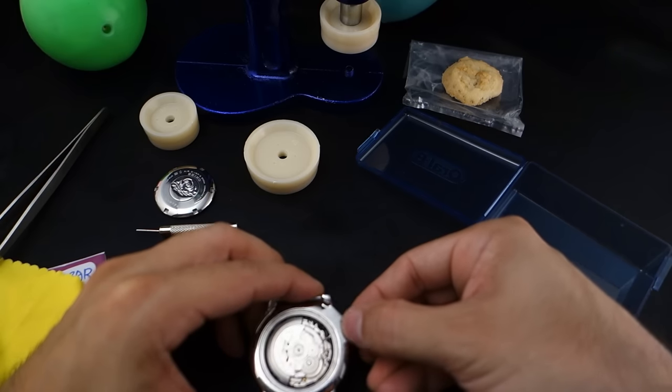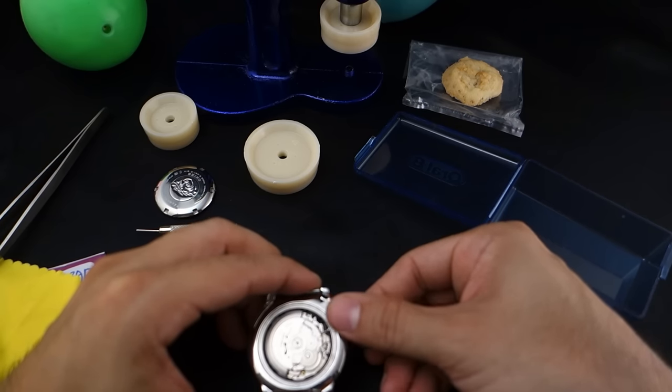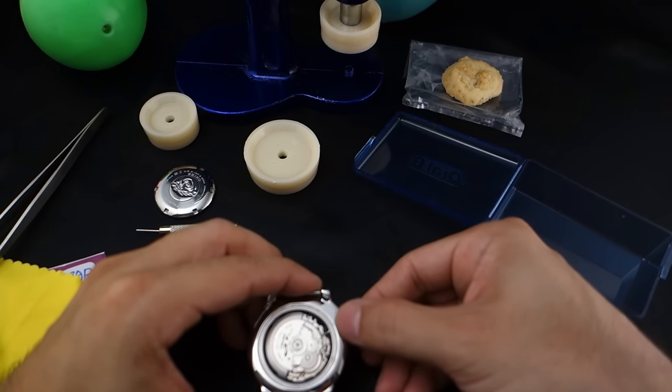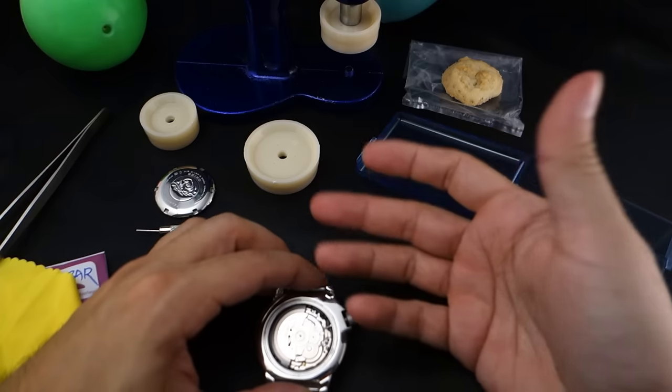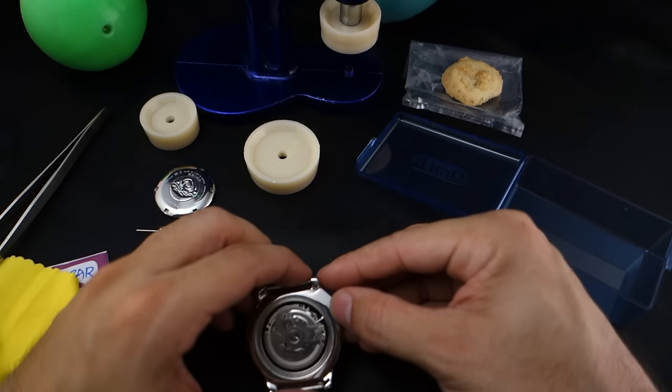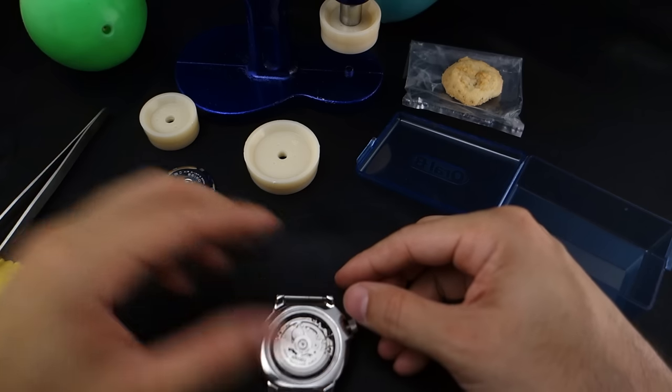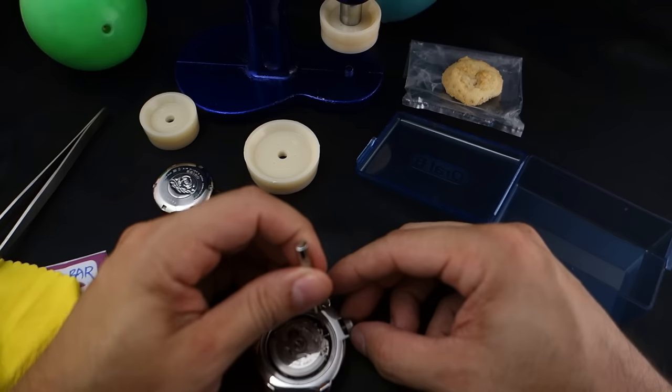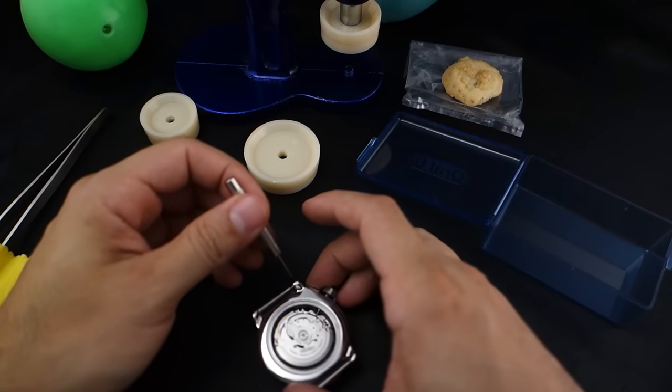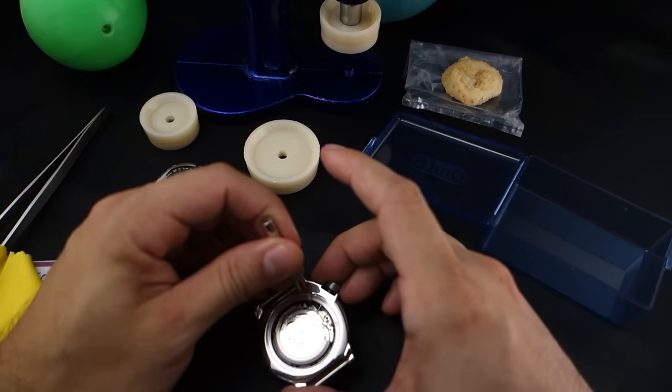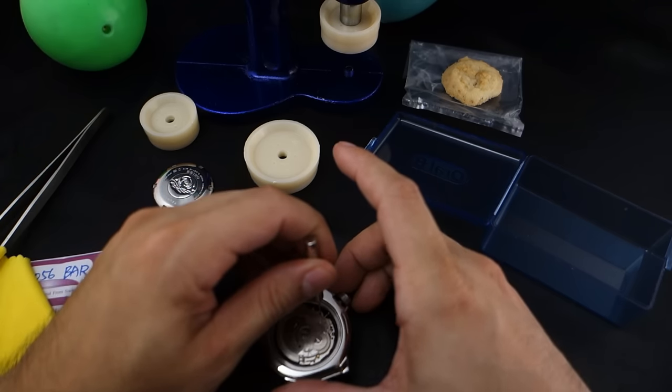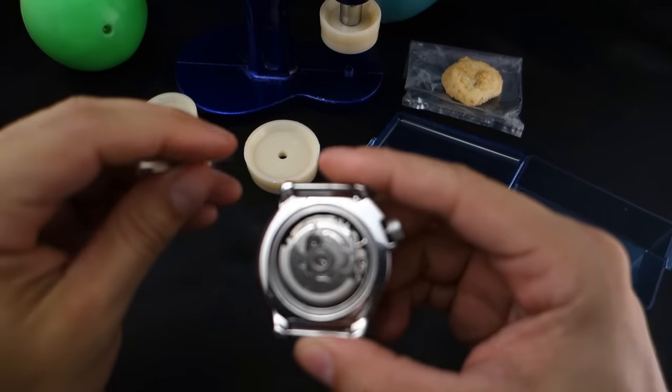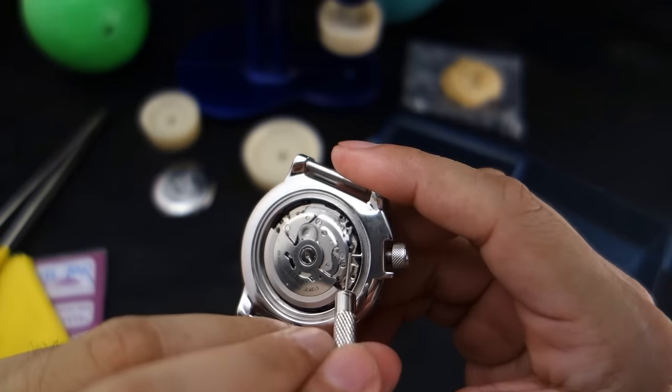First things first, unscrew the crown like so. Mitsubishi Lancers, okay, I don't know what does that even mean. I was watching a lot of Mighty Car Mods tonight and that's what happens. The camera's in the way, but I can probably get in there.